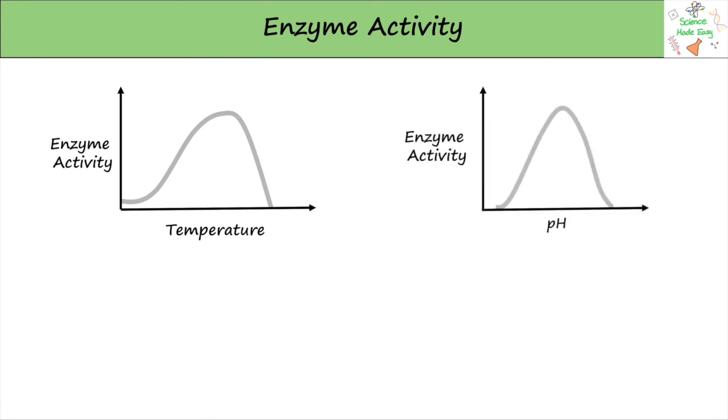Enzymes need very specific conditions to work. If their temperature is too hot, it interferes with the bonds holding the enzyme together, causing it to denature. If the conditions are too cold, the enzyme doesn't have enough energy to work. If the pH is off in either direction, it also interferes with the bonds, causing the enzyme to denature.